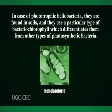Purple non-sulfur bacteria do not release sulfur because instead of using hydrogen sulfide as the reducing agent, they use hydrogen. Phototrophic heliobacteria are found in soil and use a particular type of bacteriochlorophyll which differentiates them from other photosynthetic bacteria. They are photoheterotrophs — they cannot use carbon dioxide as their primary source of carbon. Green and red filamentous anoxygenic phototrophs use filaments to move around, and their color depends on the type of bacteriochlorophyll the organism uses.